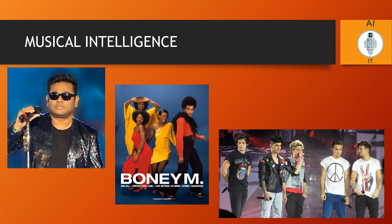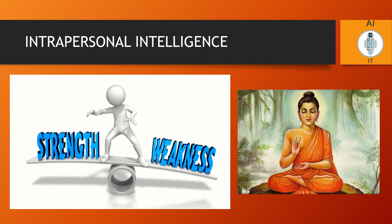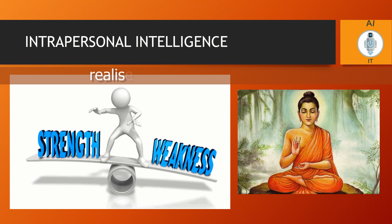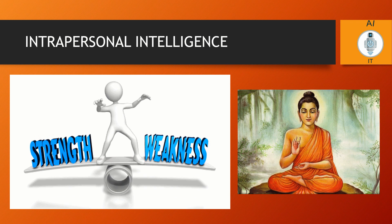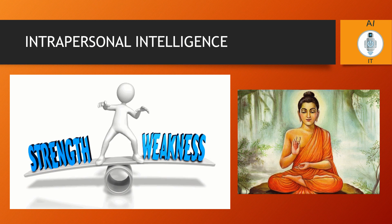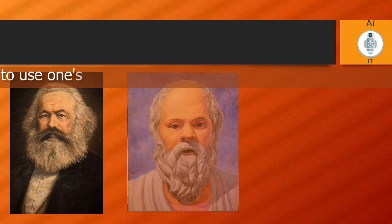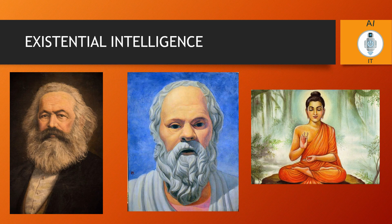The sixth type of intelligence is intrapersonal intelligence, which is the ability to realize oneself by understanding their strengths and weaknesses — that is, to understand what you feel and what you want. An example could be Gautam Buddha. The seventh type is existential intelligence: the ability to use one's thought and intuition to answer questions about human existence, tackling questions on why we live and why we die. Examples include philosophers and theologians.